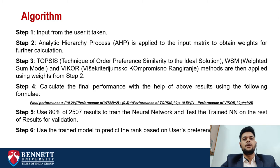Step 5: we use 80% of 2,507 results to train the neural network and then test the trained neural network on the rest of the results for validation. Step 6: we use the trained model to predict the rank based on users' inputs as preferences.